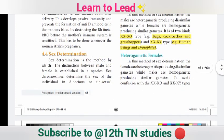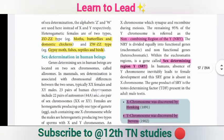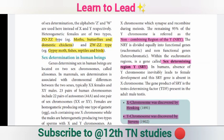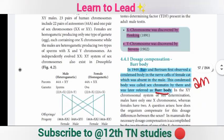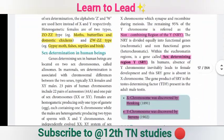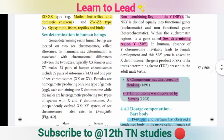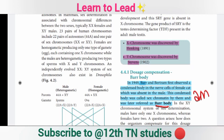Heterogametic females — there are highlighted examples. The abbreviation NRY stands for Non-combining Region of the Y. Next, DRY stands for Determining Region Y. The X chromosome was discovered by Henking, and the Y chromosome was discovered by Stevens — these are two important discovery questions.